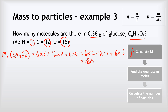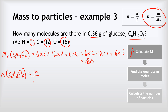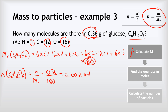The next step is to calculate the number of moles of glucose using the moles equals mass over MR formula. So the number of moles of C₆H₁₂O₆ equals mass M over relative formula mass MR. Our mass is 0.36 grams and our MR is 180, so we have 0.36 divided by 180, giving an answer of 0.002 moles. That is our second step done.